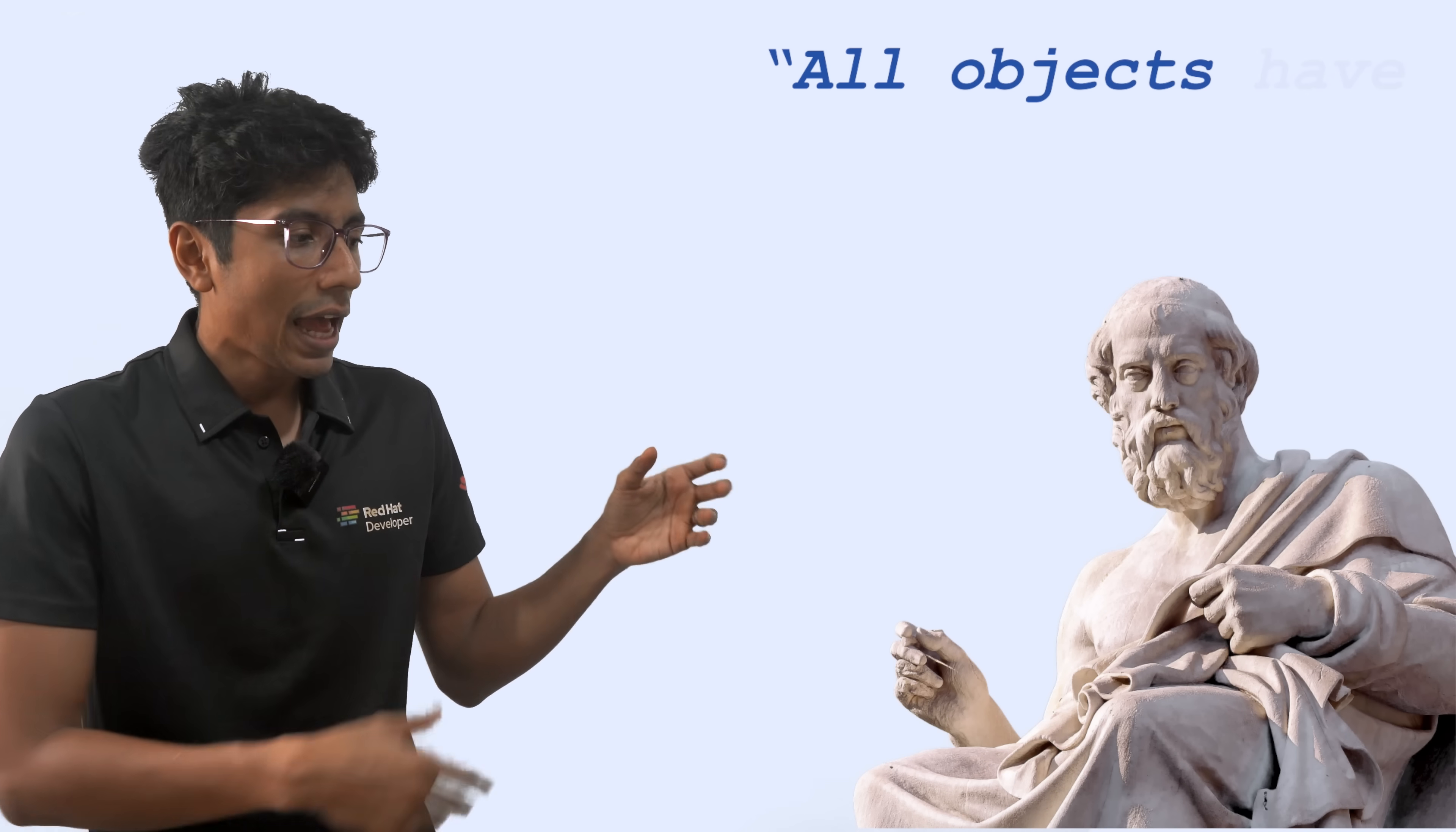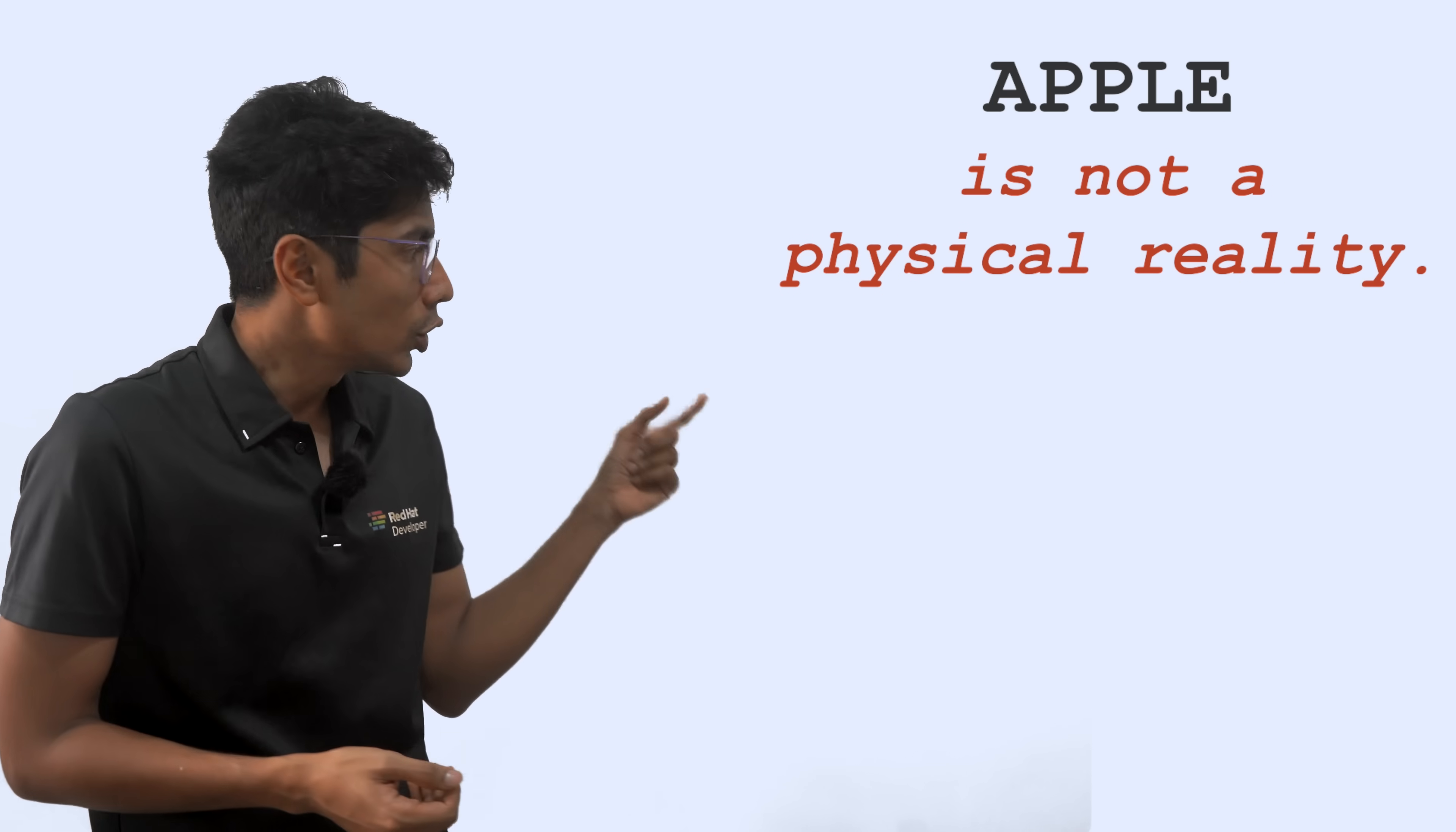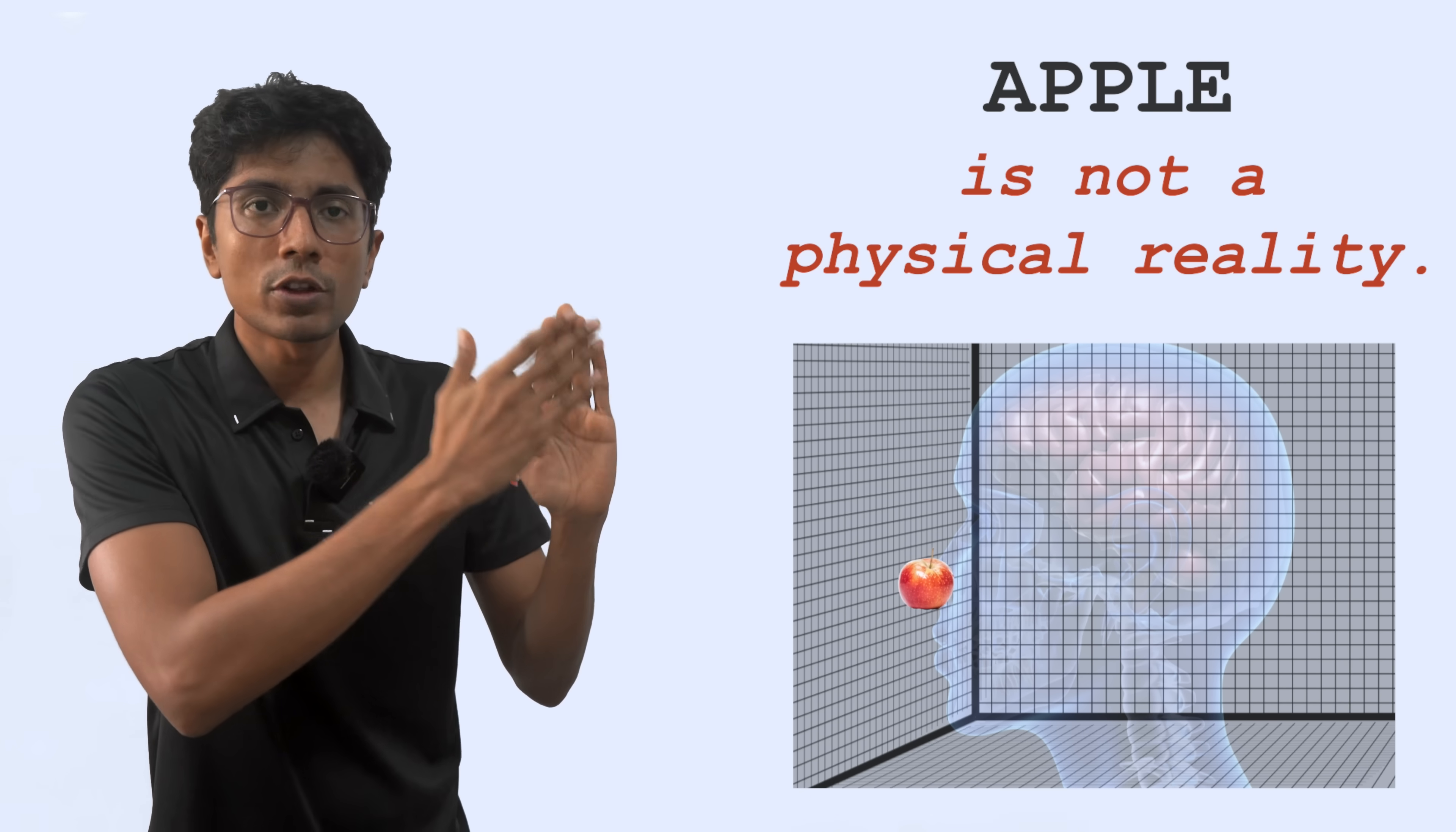So around 400 BC Plato came up with the idea that all objects have higher level representations. If I say apple then you are probably thinking of a red apple but some of you might think of a green apple, some of you might think of a peeled apple, some of you might think of an apple on a tree, some of you might think of an apple in a fruit basket. All of those are apples and so apple is not a physical reality. You can't look at a physical object and say that this is how all apples are like but there is a higher level representation for the word apple. That representation is in some sort of information space. It's out of the physical space.